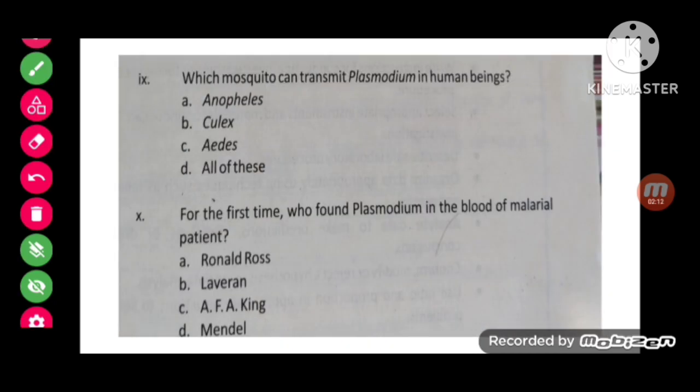MCQ: which mosquito can transmit Plasmodium in human beings? The correct option is Anopheles. Final MCQ: for the first time, who found Plasmodium in the blood of malarial patients? It was Laveran who found Plasmodium in the blood of malarial patients.